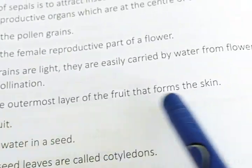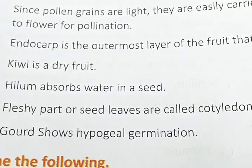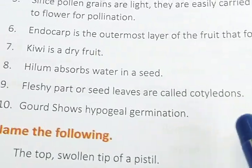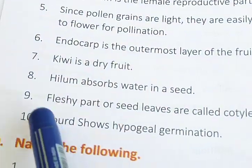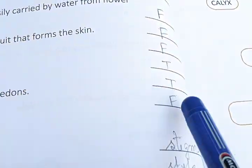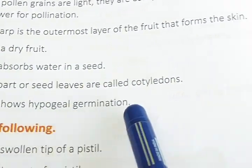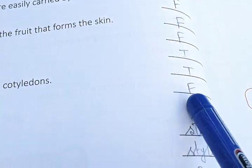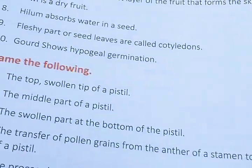Kiwi is a dry fruit — false. Hilum absorbs water in the seed — true. Fleshy parts or seed leaves are called cotyledons — true. The gourd shows hypogeal germination — false; gourd shows epigeal germination.